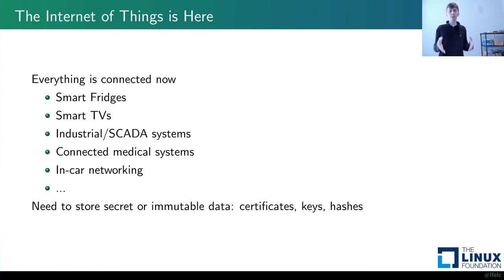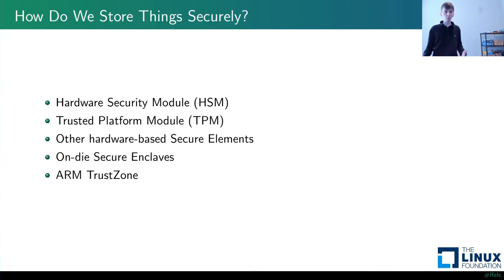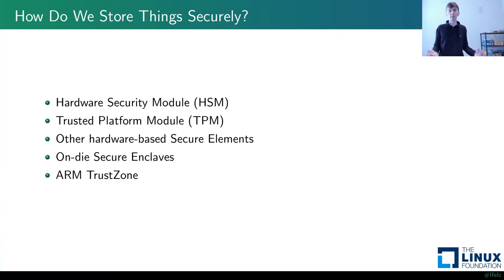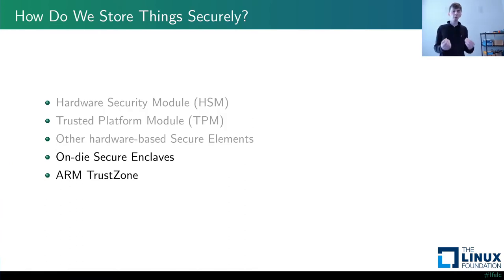In all of these cases, we need to store secret or immutable data on these platforms and secure that data so they can't be taken over, impersonated, or commanded to behave incorrectly. The easiest way to store things securely is to add a hardware element — an HSM, a TPM, or a cost-effective secure element like an ATTEC 608 from Microchip. Just put it on the PCB, offload your crypto storage and crypto routines to it.